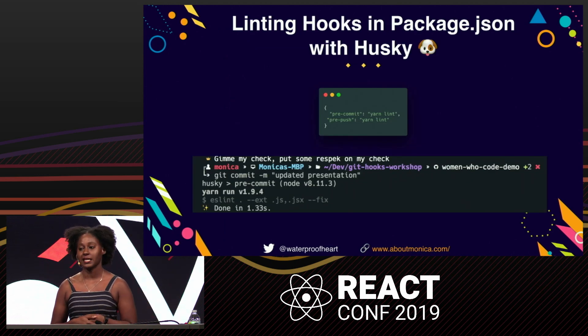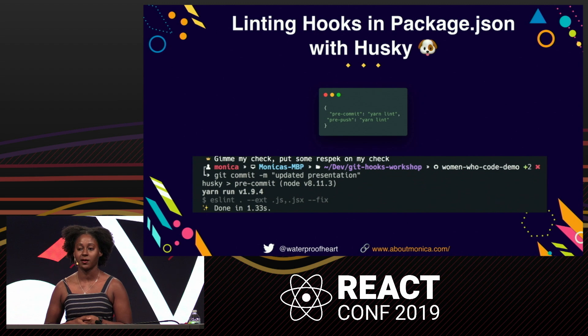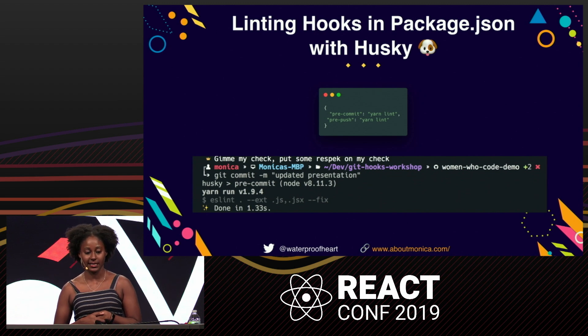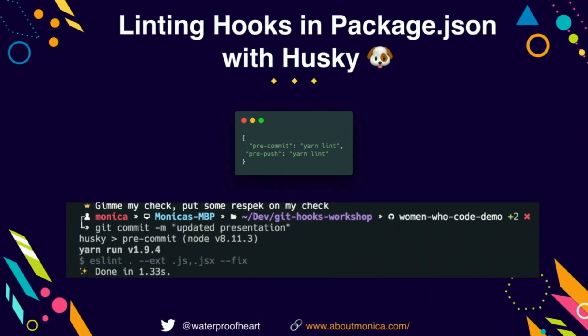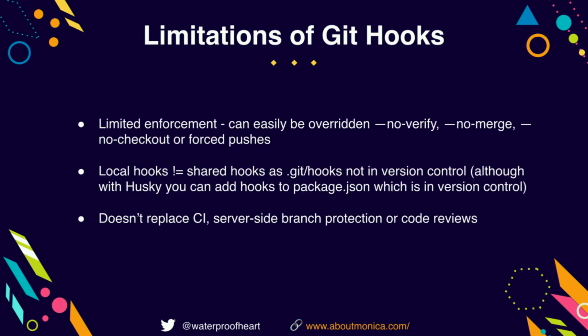If you're interested in implementing hooks with JavaScript, there's a library called Husky that allows you to add hooks to your package.json file. Here is an example of adding a linting script, so every single time I try to commit it will lint my code. If that fails, the commit will fail; if it doesn't fail, it works.